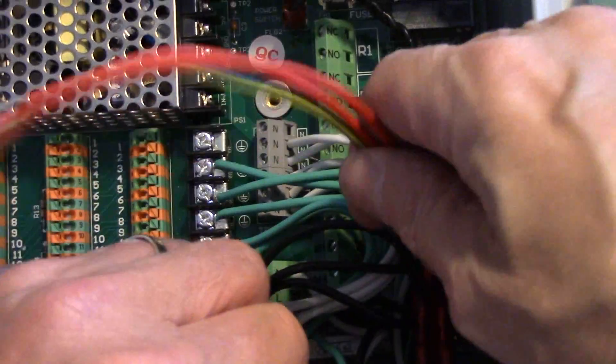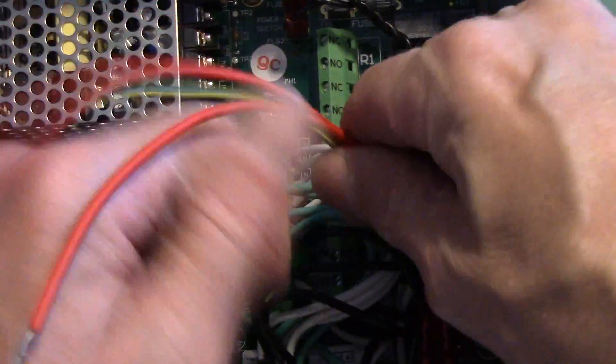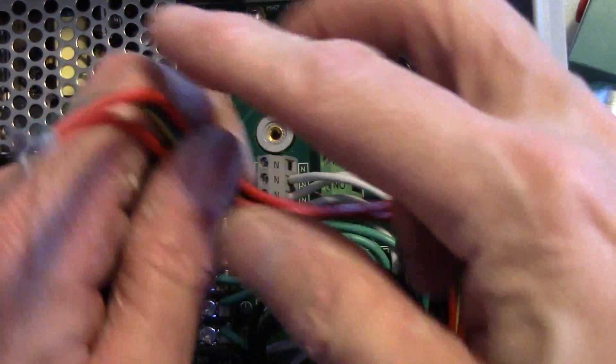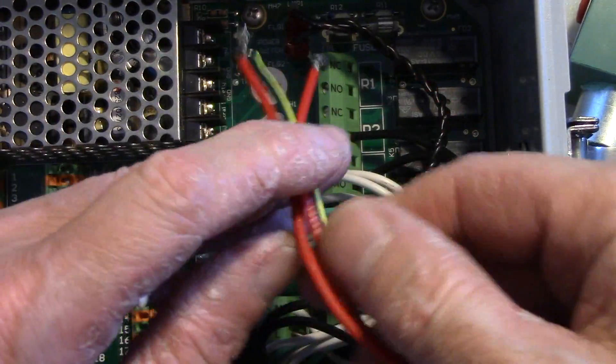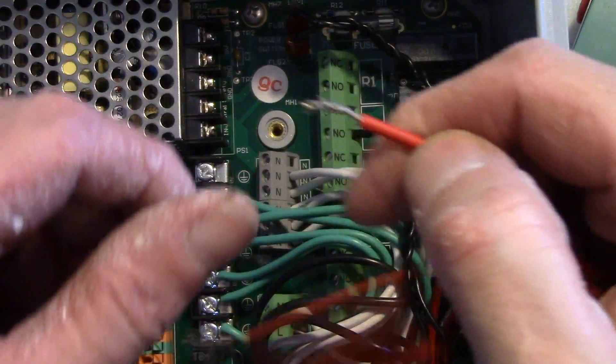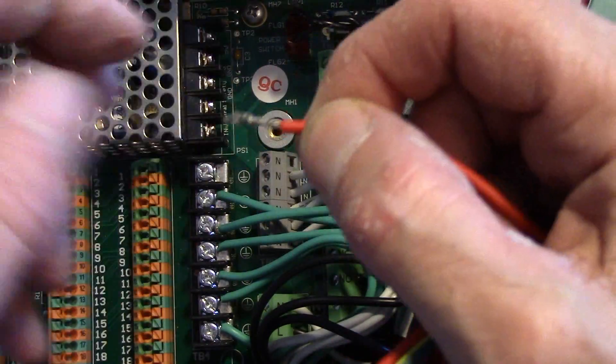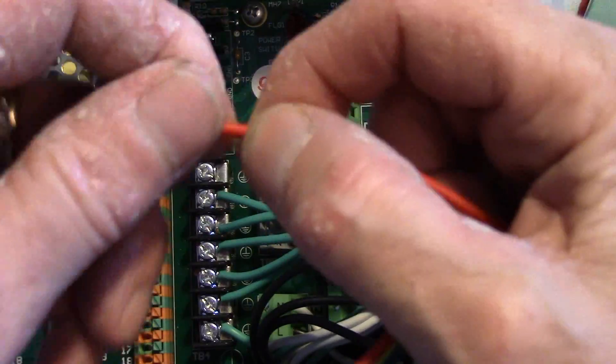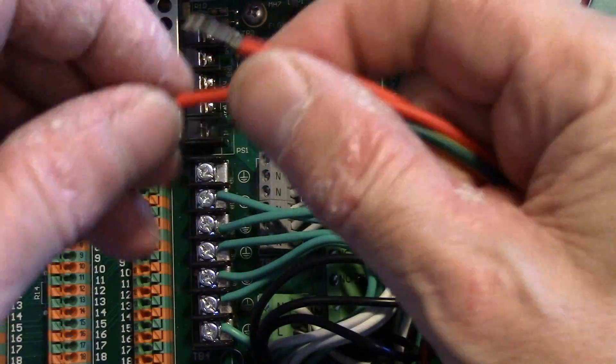You start by pulling the wires through one of the connectors on the bottom, making sure you have plenty of wire to work with when you connect them to the controller. Also, make sure the ends of the wires are not frayed and make them nice and clean so they get a nice good connection.